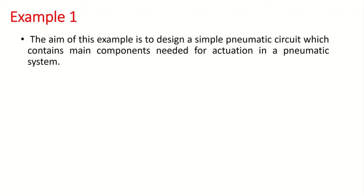Let's look at the very first example we have for today — this will also be your assignment. The aim of this example is to design a simple pneumatic circuit containing the main components needed for actuation in a pneumatic system. The very first component is the compressed air supply, which provides the air for a pneumatic system. We just need to know that for a pneumatic system, what we need is air in order to actuate a system.